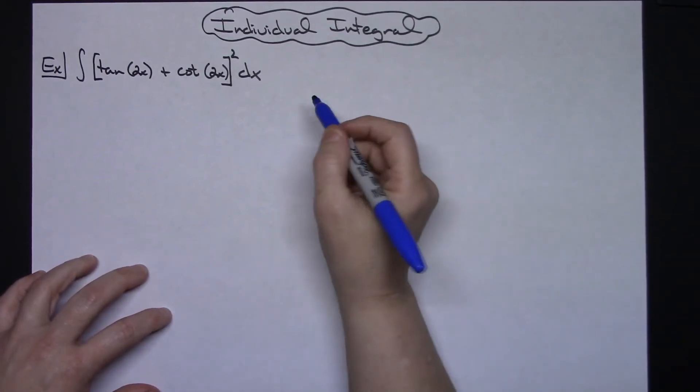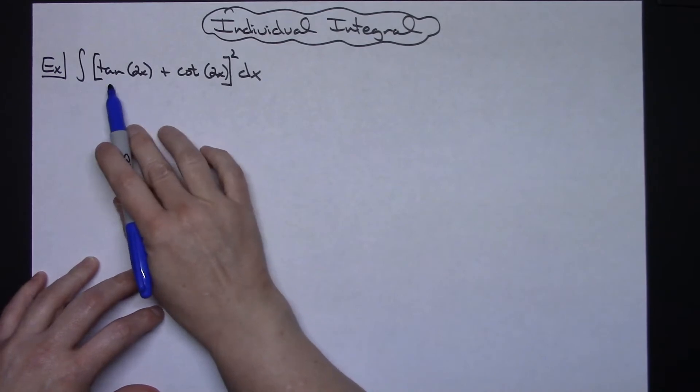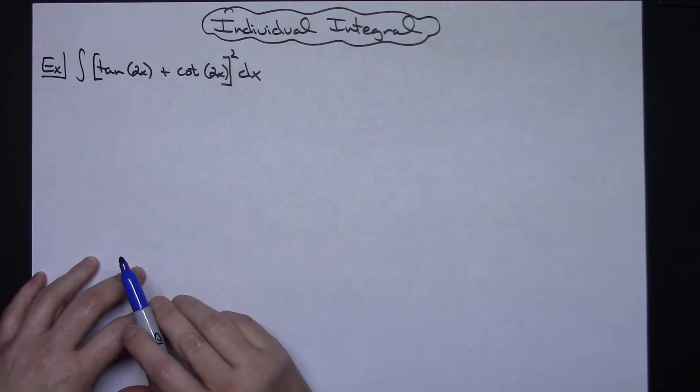Okay, in this video we're going to work out an individual integral. We're going to take a look at the integral of tangent of 2x plus cotangent of 2x quantity squared dx.